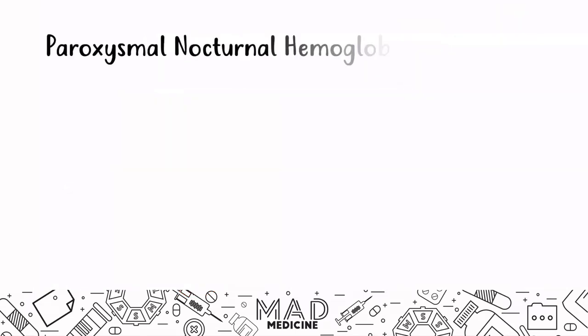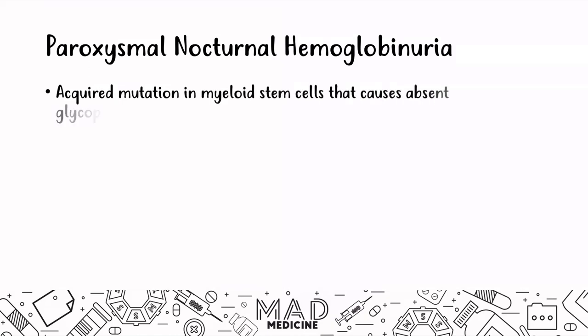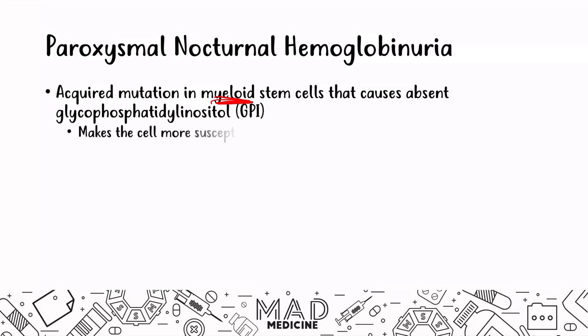Let's talk about paroxysmal nocturnal hemoglobinuria — PNH. This is a deficit in the membrane and it is an acquired mutation in the myeloid stem cells that causes an absent glycophosphatidyl inositol, a GPI anchor. This makes the cell more susceptible to complement mediated intravascular hemolysis — the actual membrane is not going to be able to protect the cell, making the red blood cell more susceptible to complement mediated hemolysis.